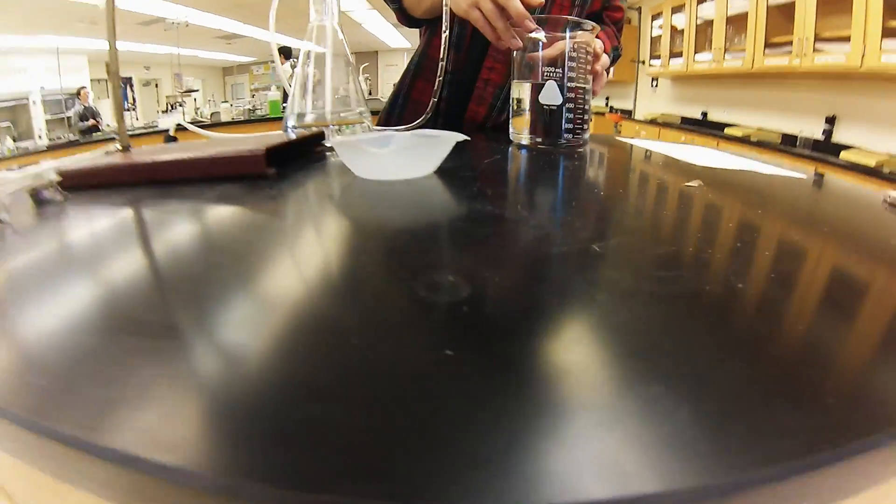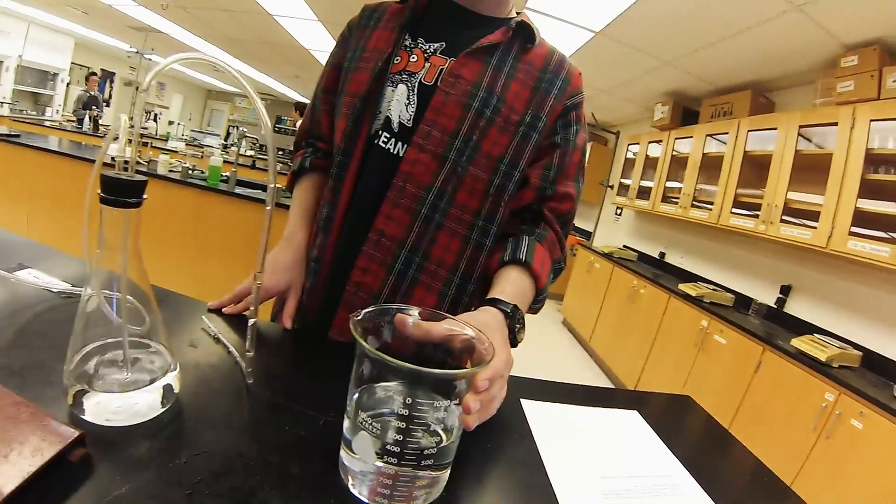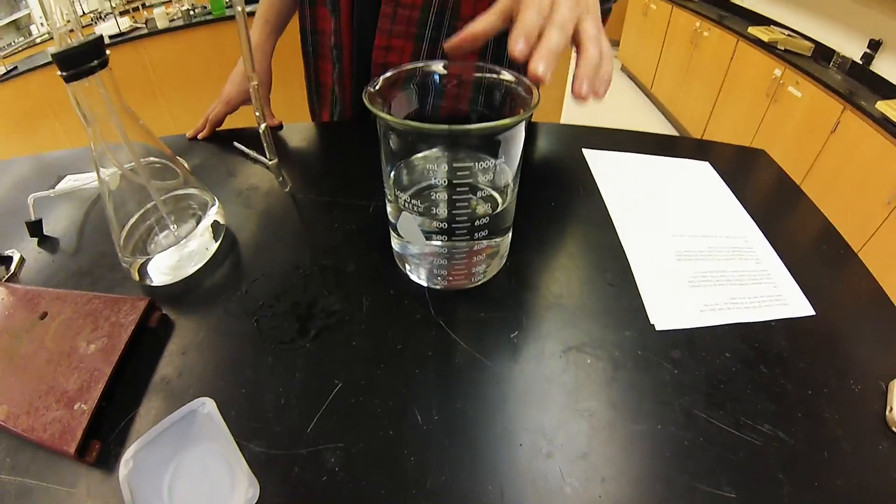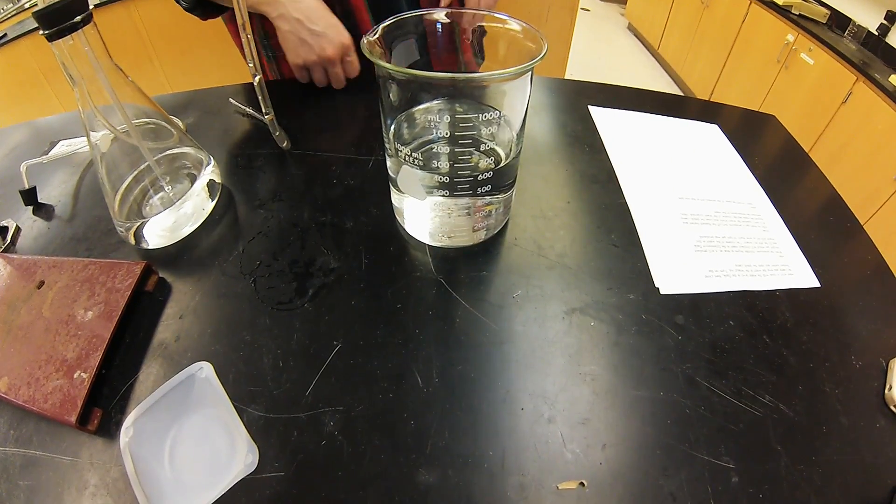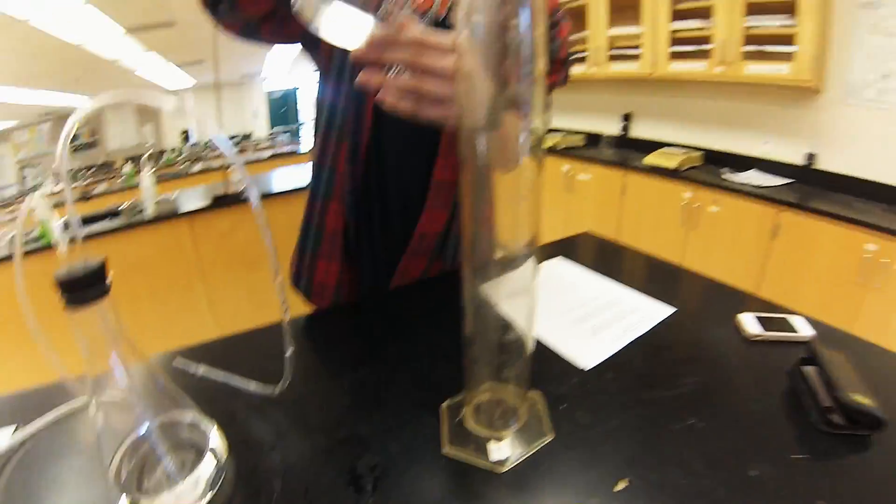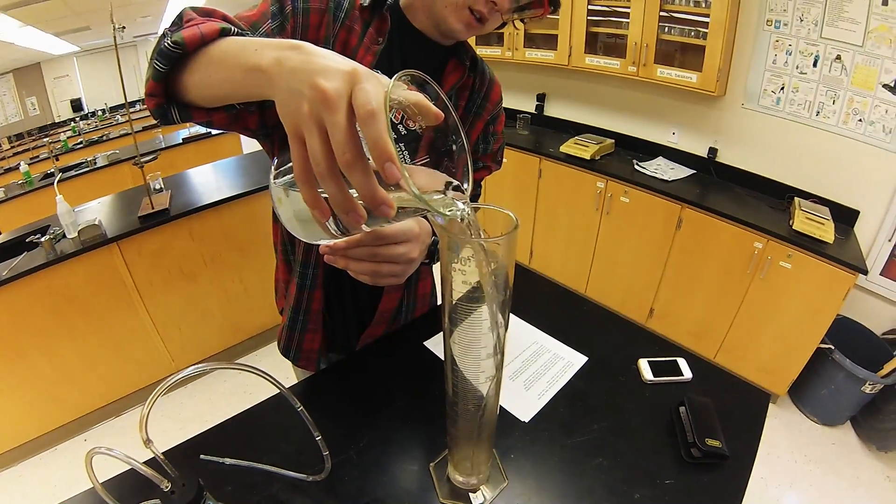This will be the total volume of gas displaced from the Erlenmeyer flask. We're going to measure this in a one liter graduated cylinder.